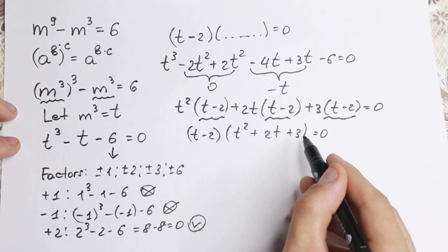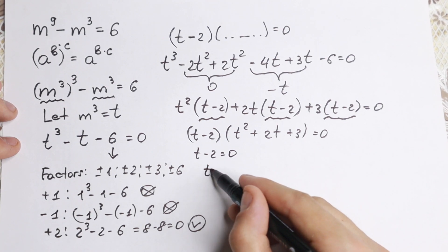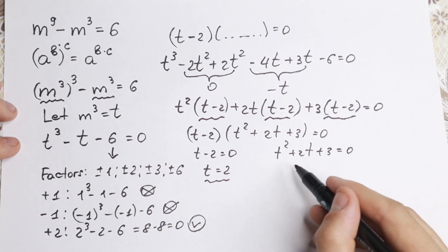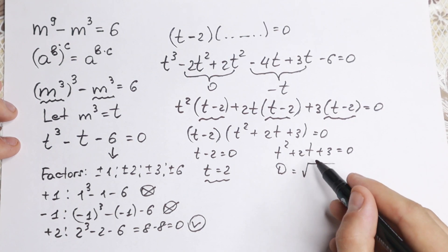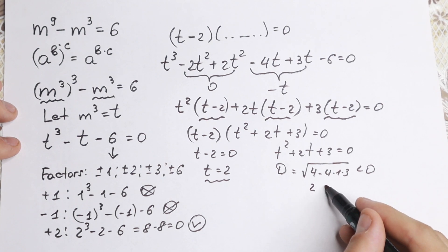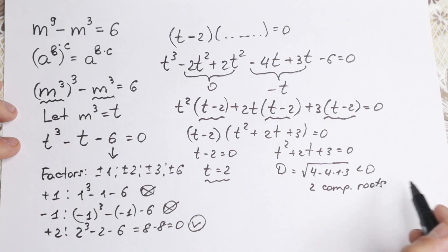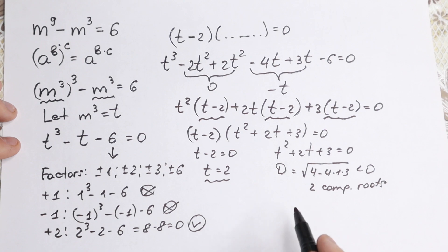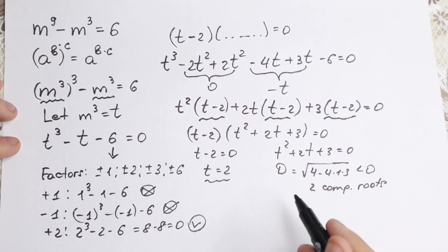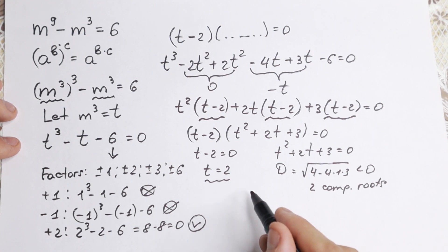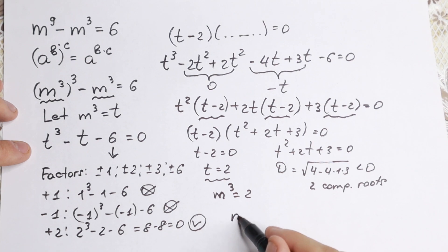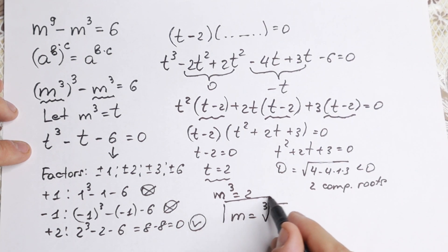Since the product equals zero, either t - 2 = 0, giving t = 2, or t² + 2t + 3 = 0. For the quadratic, the discriminant is 4 minus 4 times 1 times 3, which is negative — so it has two complex roots. Going back to our substitution m³ = t, we get m³ = 2, so m equals the cube root of 2. That is our real answer.